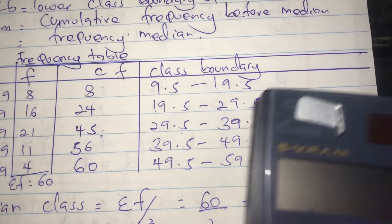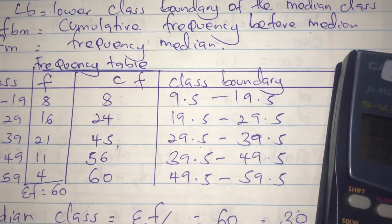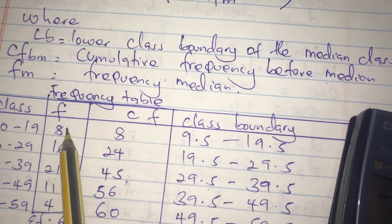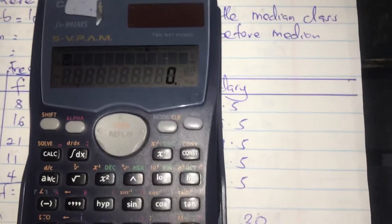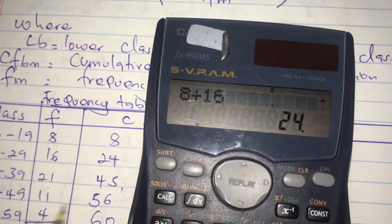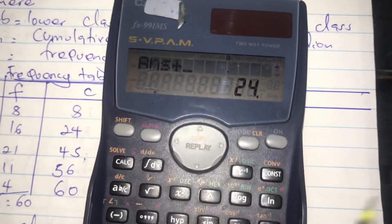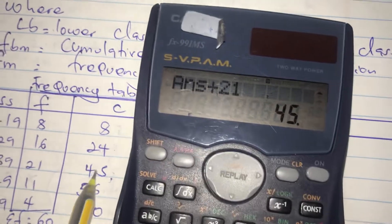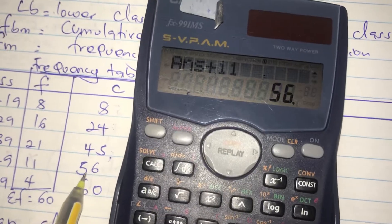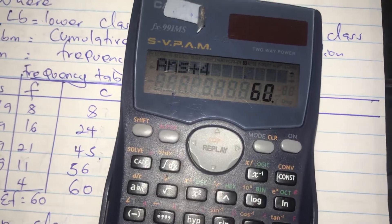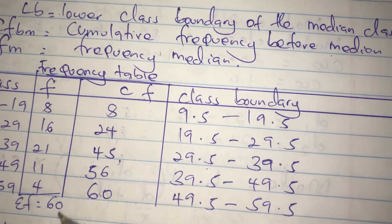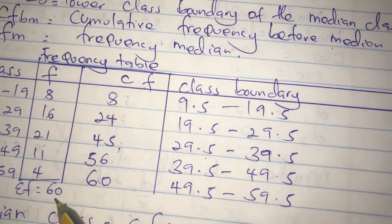Since it's called cumulative frequency, it involves adding up. We take the first frequency as it is: 8. Then 8 plus 16 gives 24. Then 24 plus 21 gives 45. Then 45 plus 11 gives 56. Then 56 plus 4 gives 60. You should make sure the last figure equals the summation of f, which is 60.